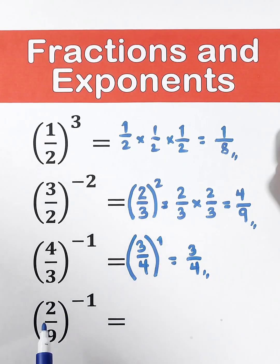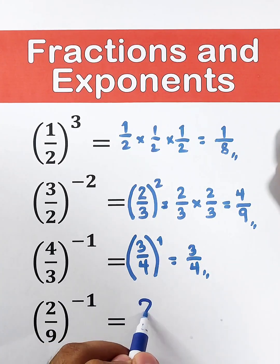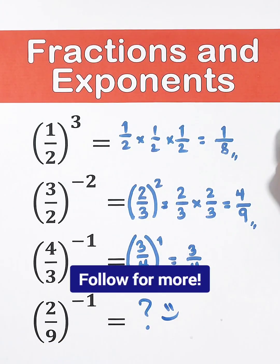Now guys, it's your turn to get the simplified form of 2 over 9 raised to negative 1. Follow for more.